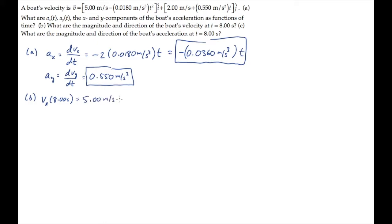Substitute the values into the x component of the equation shown in the problem statement. The x component is what shows up in front of the i hat to find that vx at 8 seconds is 3.85 meters per second. Do the same thing for the y component.